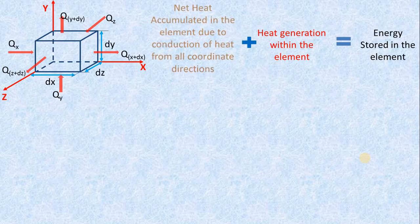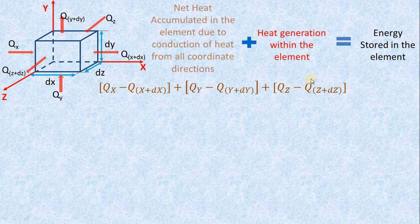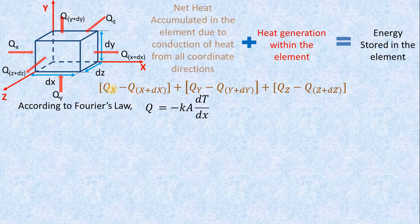The net heat accumulated in x direction is Qx minus Qx+dx. In y direction, it is Qy minus Qy+dy. Similarly for z direction. If we add all these terms, we get the net heat accumulated in all coordinate directions. According to Fourier's law, Q equals minus K times area times dT/dx.